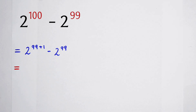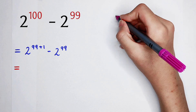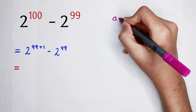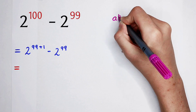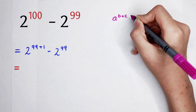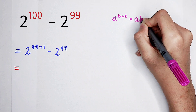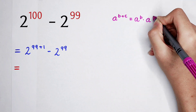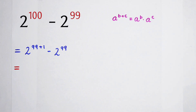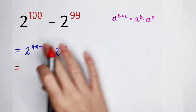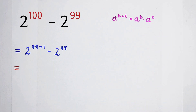Now, I'm going to use a formula: a to the power of b plus c is equal to a to the power of b, times a to the power of c. So now, a is 2, b is 99, and c is 1.